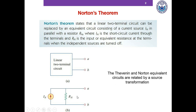Now this sounds all similar to Thevenin equivalent theorem. If you haven't checked out my Thevenin equivalent lecture please check it out as well. The Thevenin equivalent basically replaces a large portion of the circuit with a voltage source with a resistor in series. Norton's theorem does exactly the same thing except here we have an independent current source in parallel with the resistor.